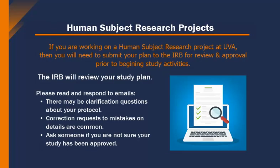If you're working on a human subject research project at UVA, you'll need to write a description of your project plan, also called a study protocol. Then you'll need to submit your plan to the IRB for review and approval. It's important to know that the IRB may need some time to review the study plan. Please remember that, as the principal investigator, you should have a copy of the approval or determination outcome letter from the IRB before any study activities with human subjects take place.